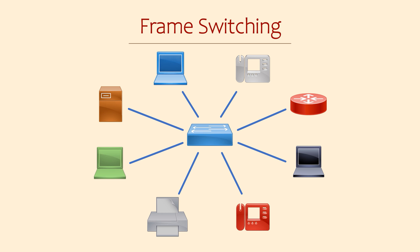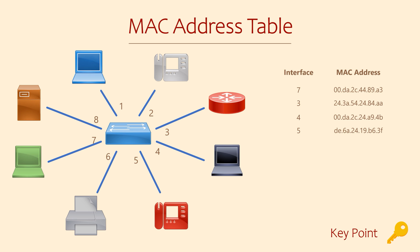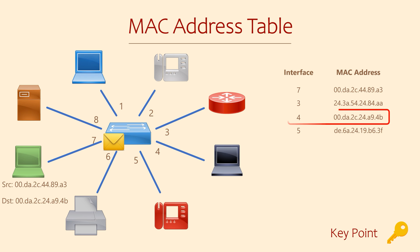How does a switch know which link to send the frame on? It does this by learning the MAC addresses of connected devices and the interfaces they are connected to. These details are stored in the MAC address table. When a frame arrives at a switch port, the switch takes a look at the destination MAC address — remember that this is in the Ethernet header. It looks for this MAC address in the MAC address table, finds the port that the MAC address belongs to, and then forwards the frame out of that port.